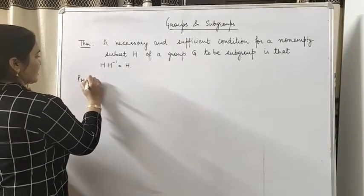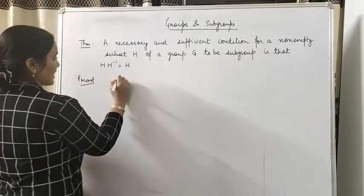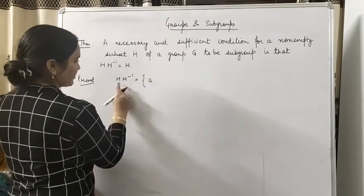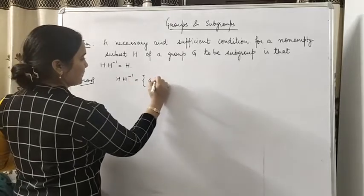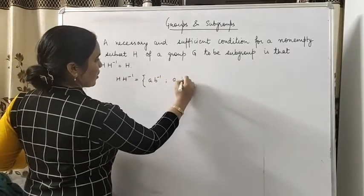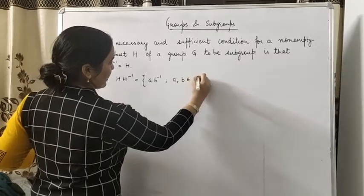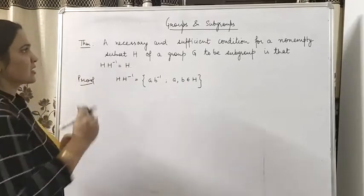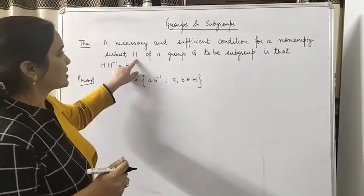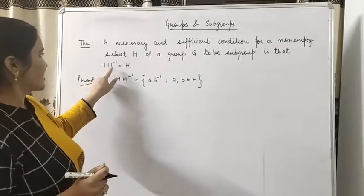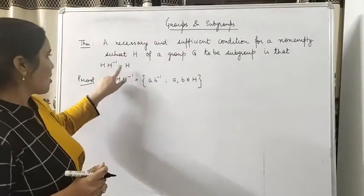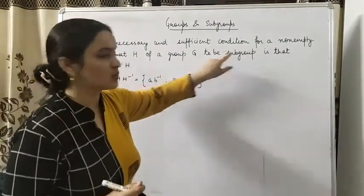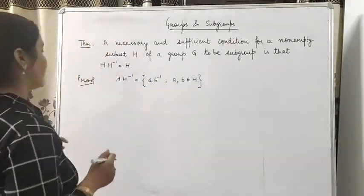Proof. Let us first define elements of H·H⁻¹. किस तरह के elements होंगे? A·B⁻¹ type के, where A, B belongs to H. और हमने proof करना है कि अगर H subgroup है तो H·H⁻¹ = H, और अगर H·H⁻¹ = H है तो H subgroup होगा। Clear? If and only if results.